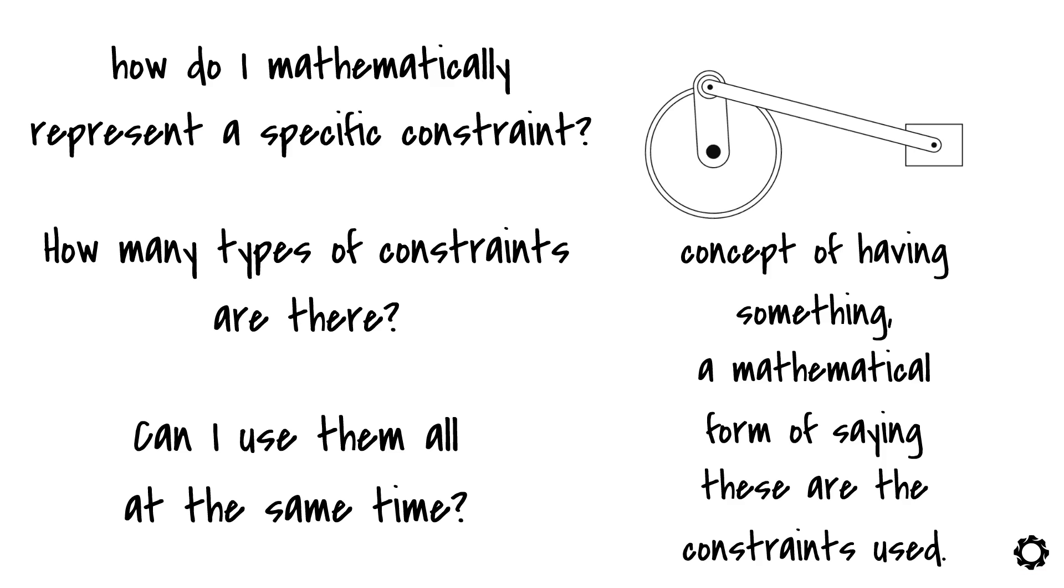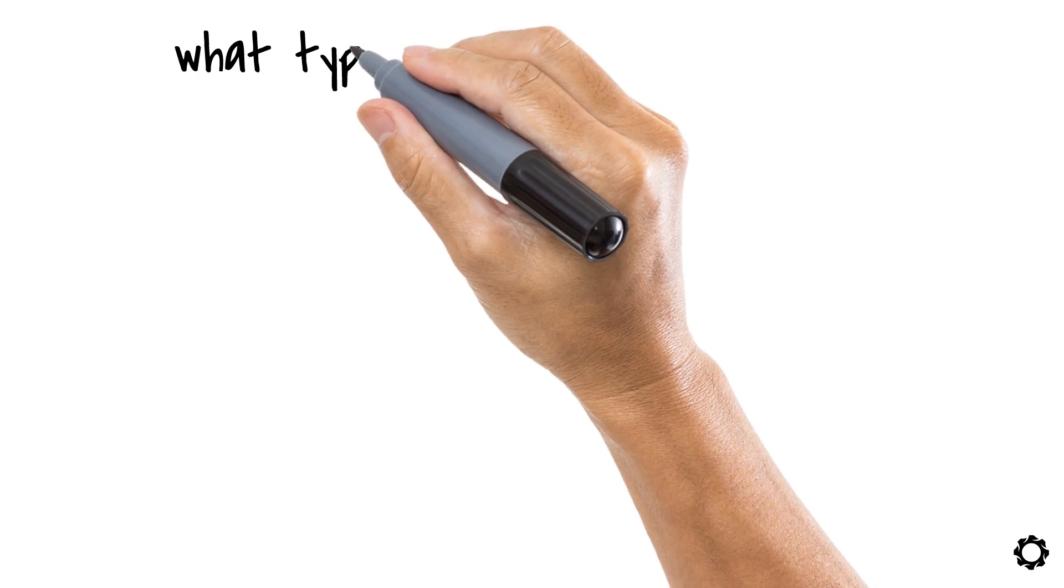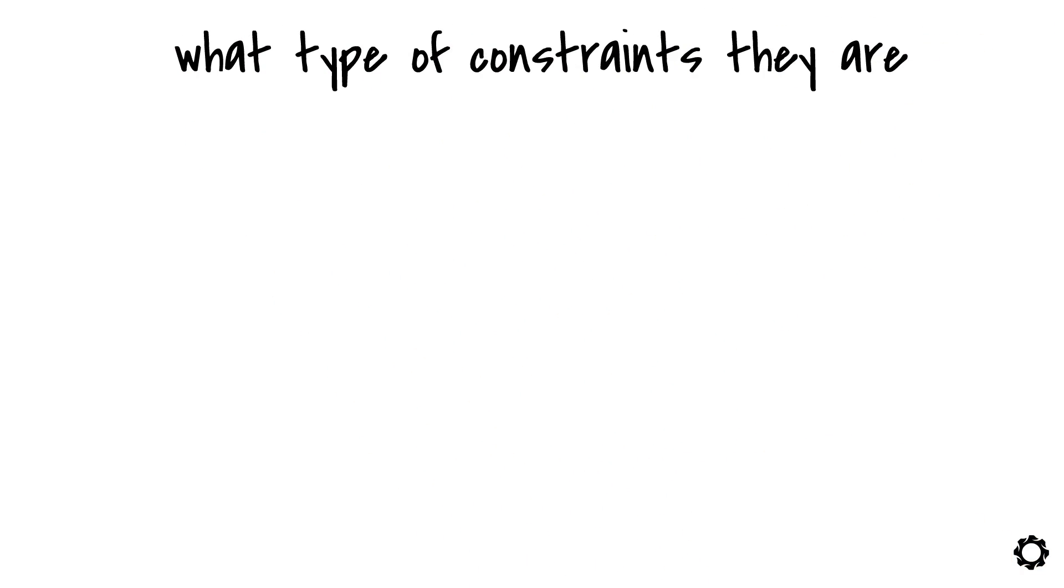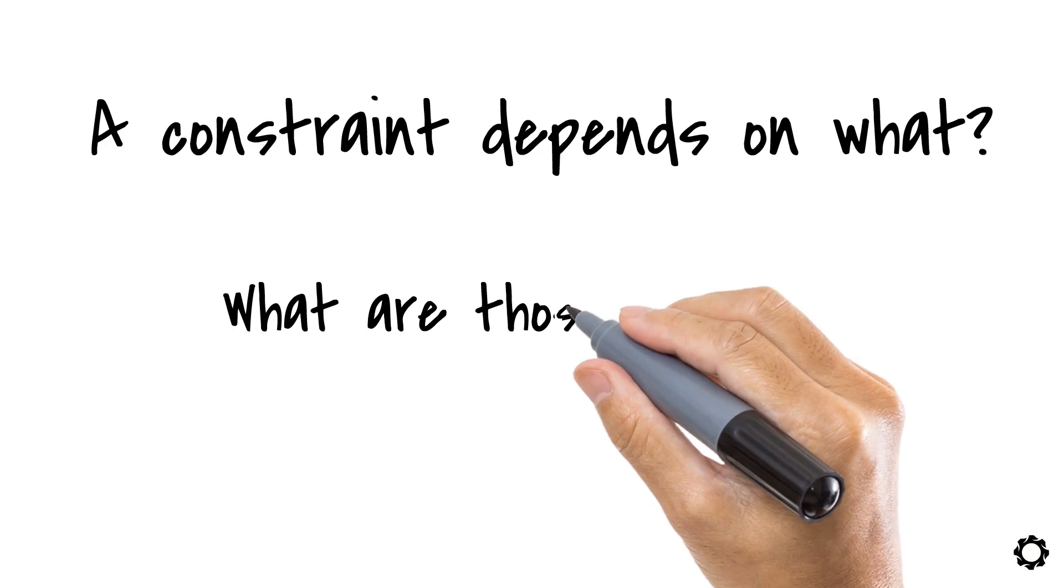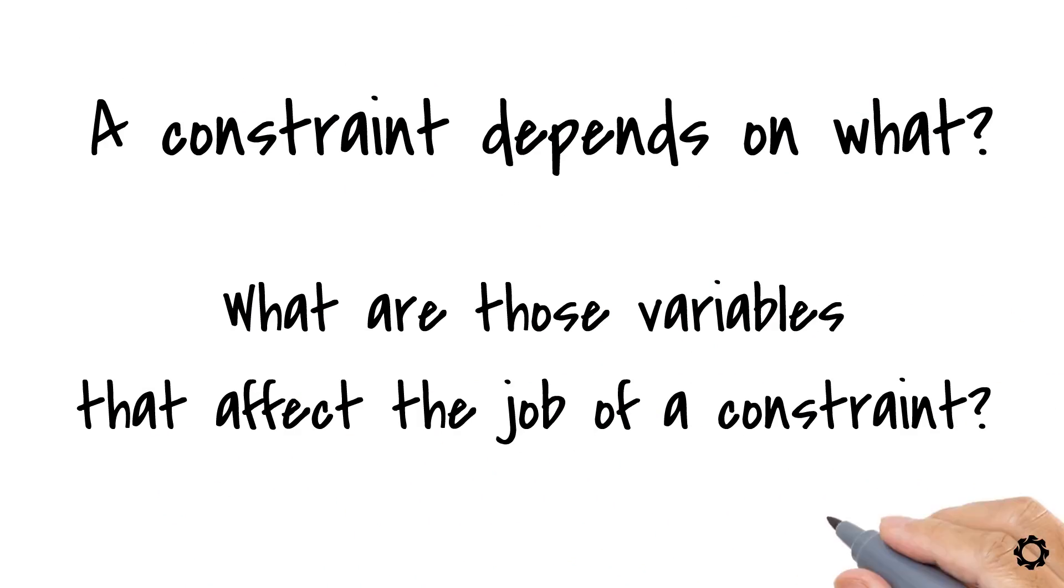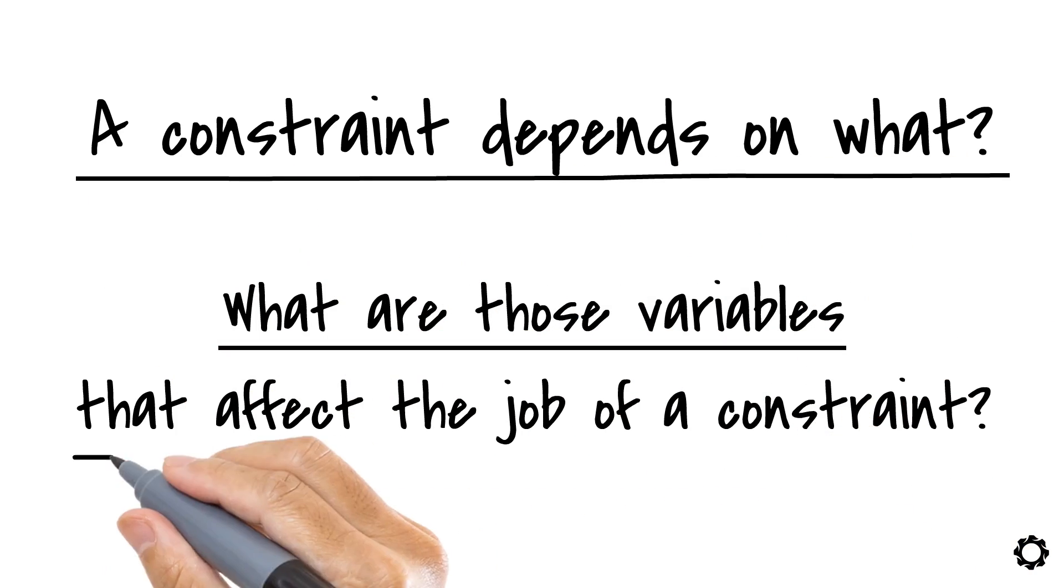Let's jump one step back. Before going into the details of what type of constraints they are, I could also ask myself, a constraint depends on what? Or what are those variables that affect the job of a constraint in general? I think these are among the first questions that we should tackle.